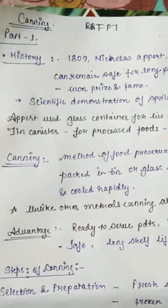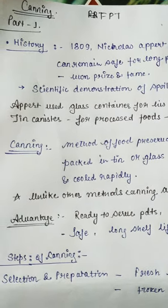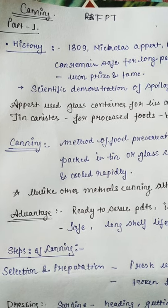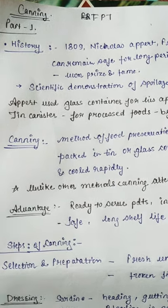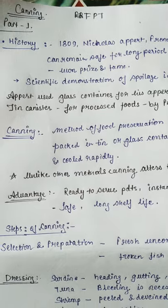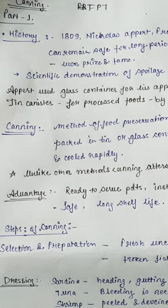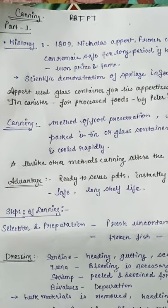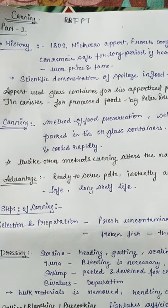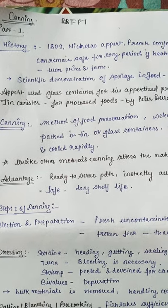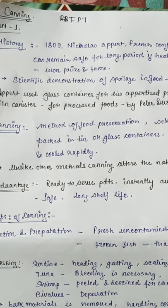Starting with canning. Canning involves how we can the fish product. First we will discuss about the history of canning. In 1809, Nicolas Appert, a French confectioner, was there.